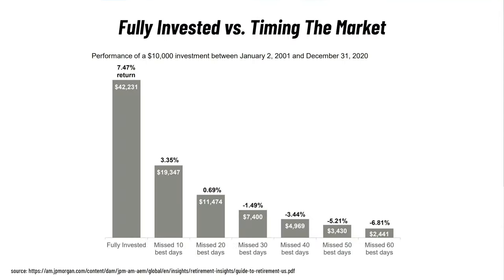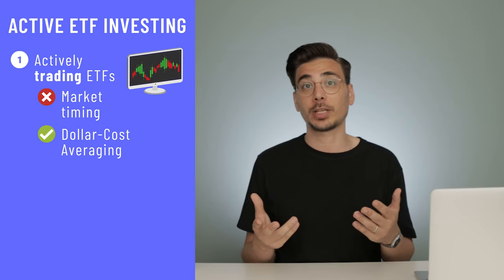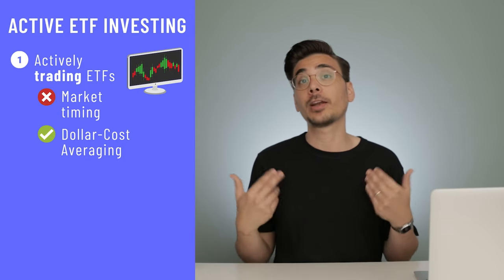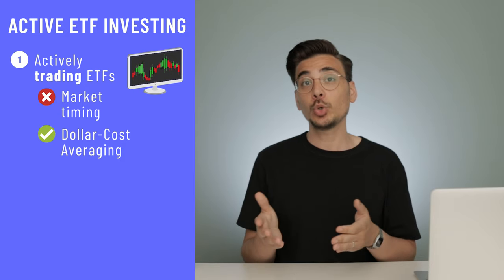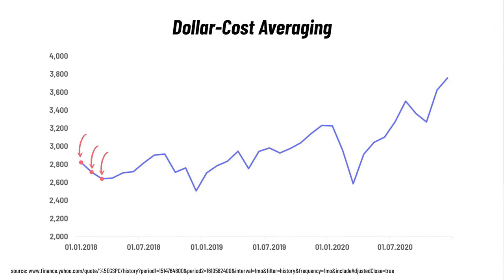In the last 20 years, if you stayed fully invested without trying to time the market, you would have gotten an annual return of 7.5%. If you missed the 10 best trading days, your return would have dropped to 3%. If you missed the 20 best trading days, your annual return would have been below 1%. A more effective strategy is dollar cost averaging — investing the same fixed amount regularly, like once a month, into the same ETF or stock — buying a different number of shares each time based on the price.